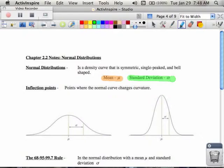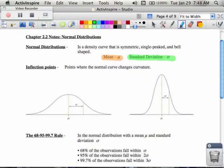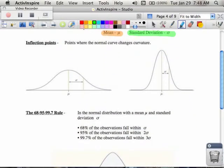One of the first things you probably should know about density curves is that they have inflection points. Inflection points for those of you taking calculus are where you change concavity, and on our density curves, that is one standard deviation away from the mean.